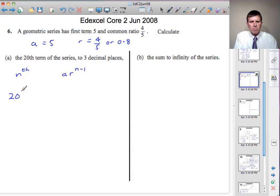So the 20th term will be 5 multiplied by R to the power 19, which is 5 multiplied by 0.8 to the power 19.